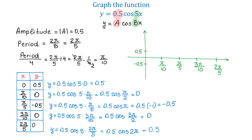Once we have the coordinates of all 5 points, let's start plotting them: (0, 0.5), (π/10, 0), (π/5, −0.5), (3π/10, 0), and (2π/5, 0.5). From here, I will connect the points to form the graph. This is the graph of the function y equals 0.5 cosine of 5x. I hope you enjoyed the video — please subscribe, leave a comment, and thank you for watching!